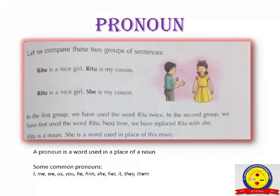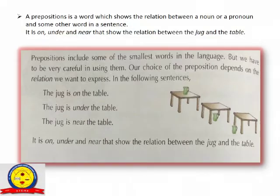Here are some examples by which you can understand easily. Let us compare these two groups of sentences: 'Ritu is a nice girl. Ritu is my cousin.' versus 'Ritu is a nice girl. She is my cousin.' Here 'she' is used in place of 'Ritu'. I hope you understood about nouns and pronouns.